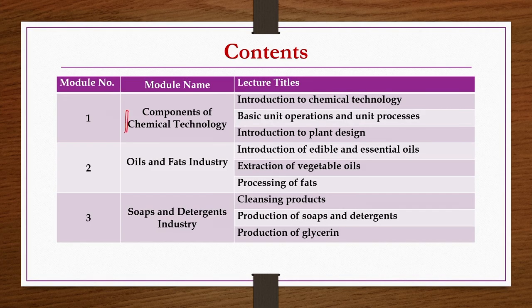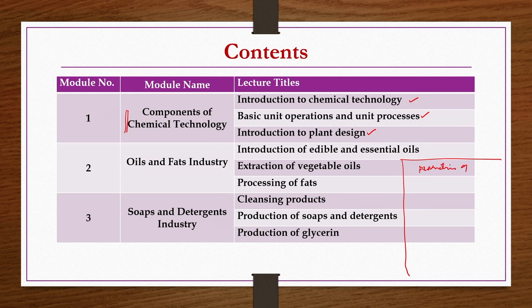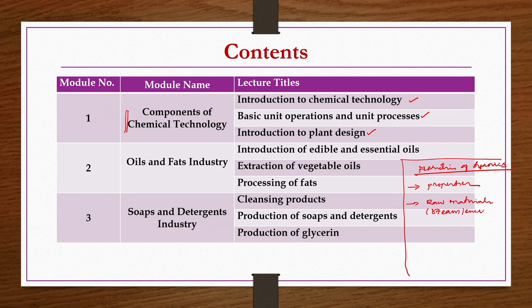Coming to the contents of the course: in the first week, we will discuss components of chemical technology — introduction to chemical technology, basic unit operations and unit processes of organic chemicals production plants, and introduction to plant design. From the second week onwards, we will discuss production of different types of organic chemicals. For each organic chemical, we start with properties of the chemical, then raw materials required, along with any steam or energy requirements.